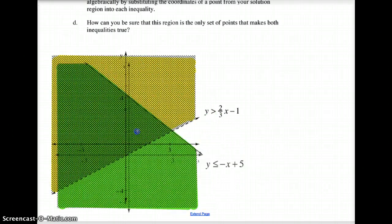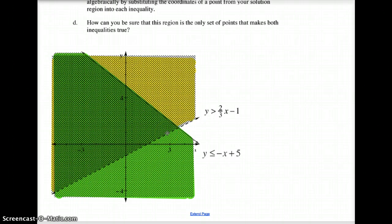If I graph those both on the same set of graphs, the question becomes what is the solution set? This portion where nothing is shaded is not the solution set. The yellow portion is a solution to this one but not this one. The lighter green section is a solution to the bottom one but not the top. The solution set to both is this darker green or darker shaded area. That is where both of them are shaded.